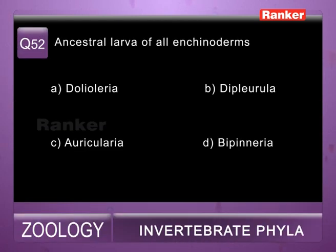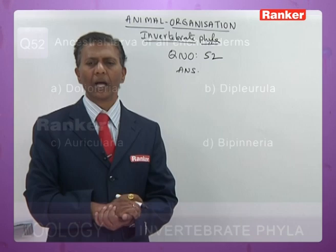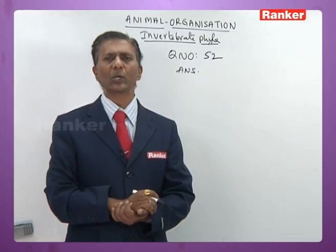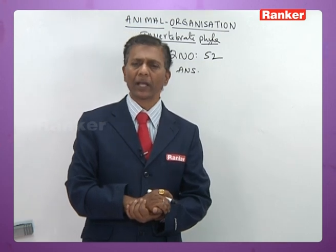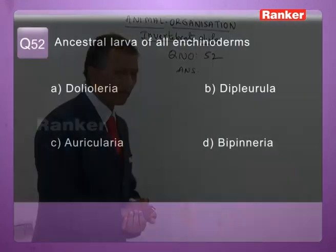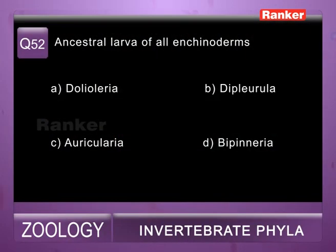Question fifty-two: the ancestral larva of echinoderms — a) doliolaria, b) dipleurula, c) auricularia, d) bipinnaria. Dipleurula is said to be the ancestral larva of echinoderms. So fifty-second question correct answer is b.